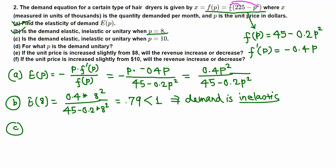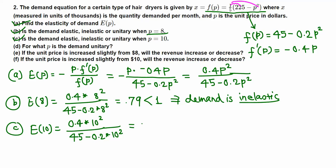For part C, we find the elasticity of demand at p = 10. Plug p = 10 into the formula: E(10) = 0.4 times 10 squared, all over 45 minus 0.2 times 10 squared. Using a calculator, this comes out to about 1.6, which is greater than 1, meaning the demand is elastic. If the price is increased a little, the revenue decreases.